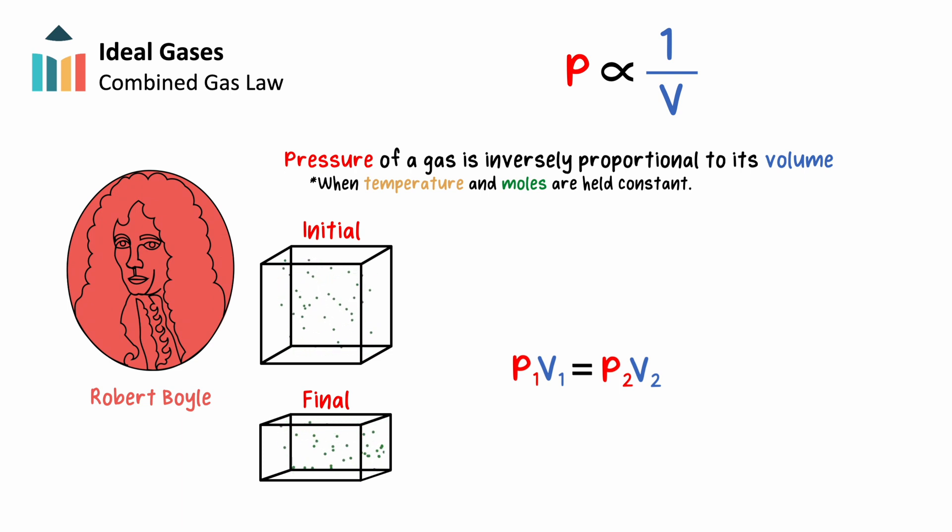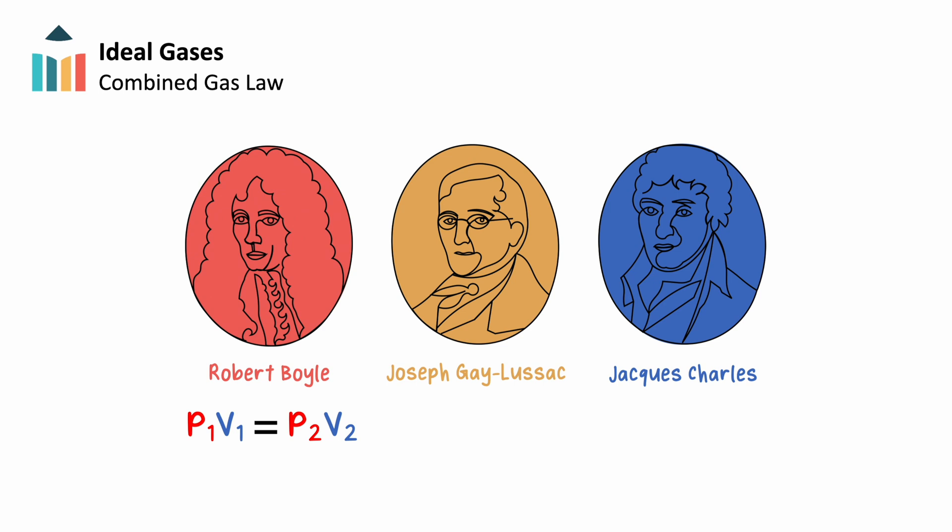This equation defines the mathematical relationship between pressure and volume, as outlined in Boyle's law: p1 times v1 equals p2 times v2.